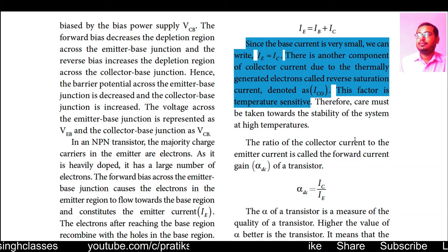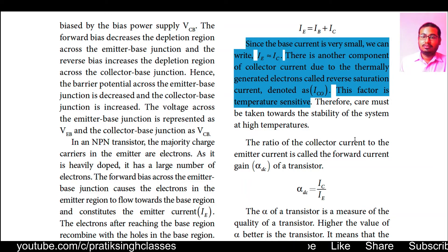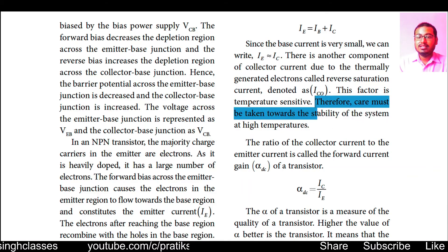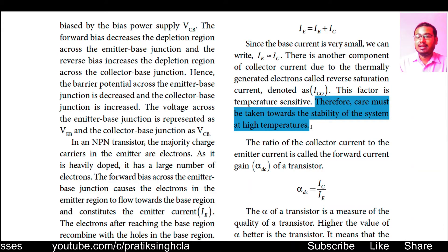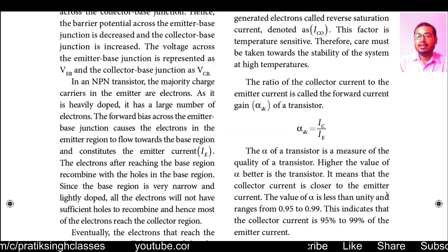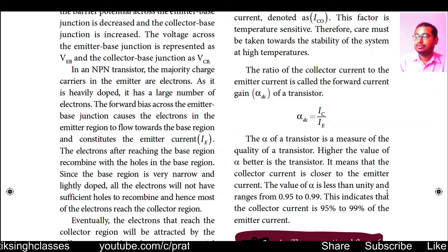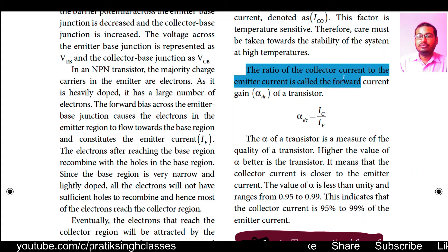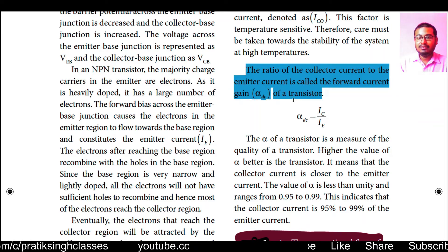As more time passes, the temperature increases due to current flow through the conductor, and thermally excited electrons will come out. Therefore care must be taken towards the stability of the system at high temperatures. Wherever we have a BJT or PNP or NPN transistor in any device, a fan is attached to them so that heat is dissipated quickly to the surroundings.